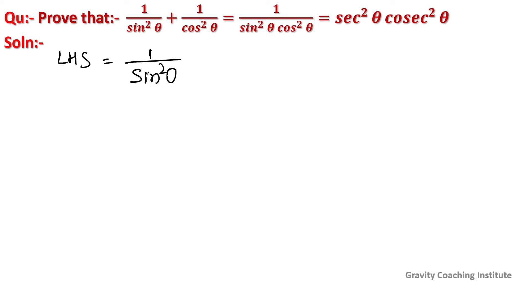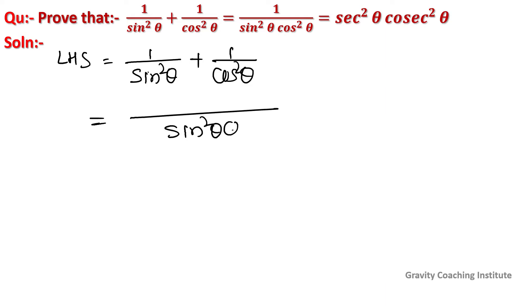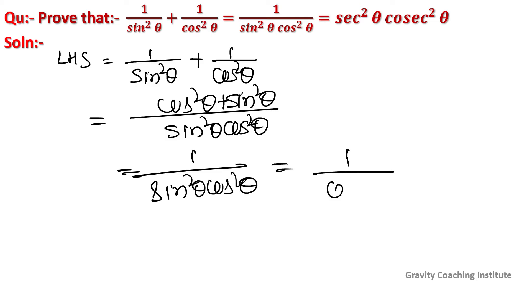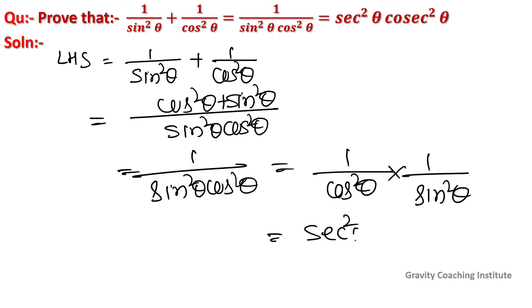Taking 1/sin²θ + 1/cos²θ: 1/cos² gives sec²θ, and 1/sin² gives cosec²θ. Therefore this equals sec²θ · cosec²θ = RHS. Hence proved.